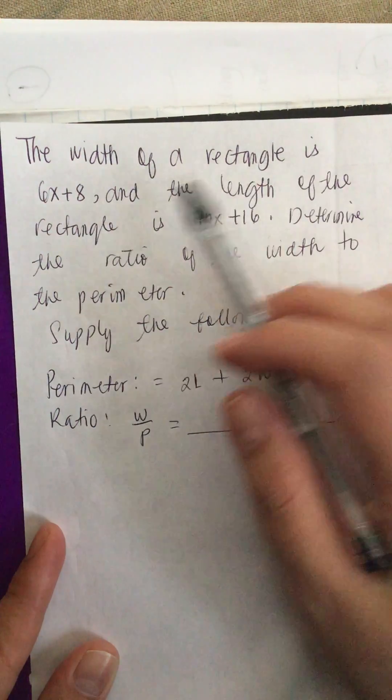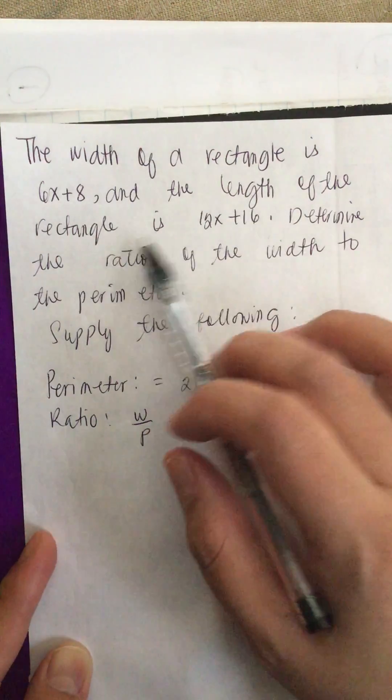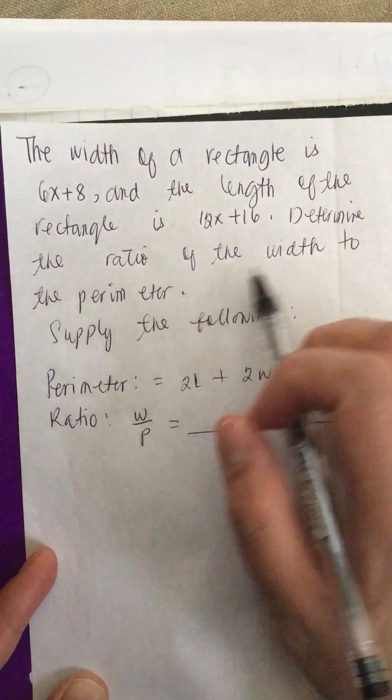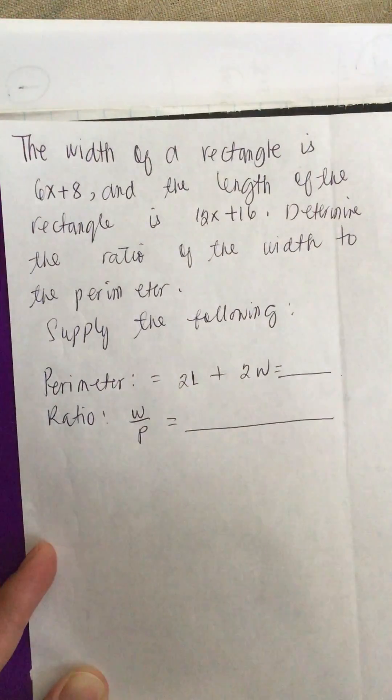The width of a rectangle is 6x plus 8, and the length of the rectangle is 12x plus 15. Determine the ratio of the width to the perimeter. Supply the following: